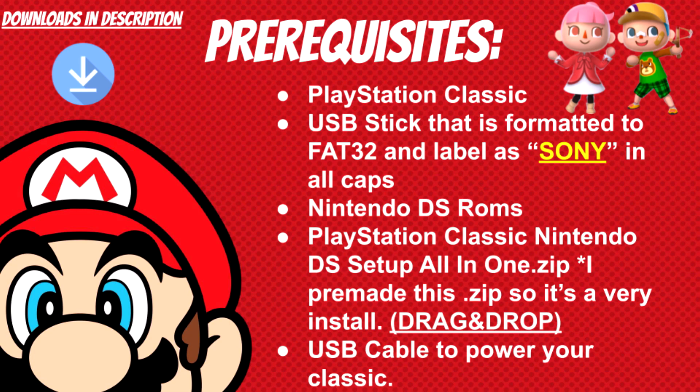Here are some prerequisites and things you'll need before getting started. You'll need a PlayStation Classic and a USB stick — preferably USB 2.0, formatted to FAT32, and labeled as SONY in all capital letters. That SONY label in all caps is required, and I'll explain more about that later. You'll also need your Nintendo DS ROMs — I won't provide links for that, just use Google.